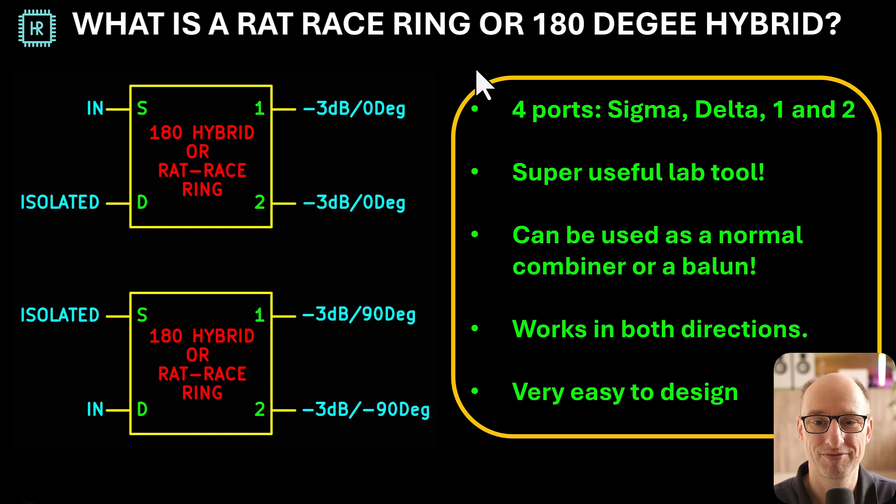So let's see what we're talking about here. This device can operate in two modes: the in-phase mode and the out-of-phase mode. I also call it the sigma or the delta mode. It has four ports: sigma, delta, port 1 and port 2. On the left top you see here the sigma mode, so this is how you can use it as a normal power divider or combiner.